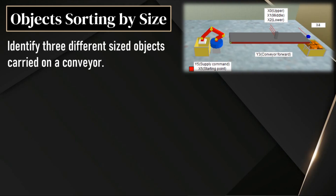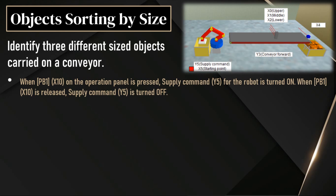Let's see what the given program is. When push button 1 is pressed, the supply command will be turned on. If push button 1 is released, the supply command will be turned off. That means whenever we press push button 1, the robot will supply a box on the conveyor. The robot will supply randomly different size boxes — either small, medium, or large — but we have to identify the size of the box using sensors.